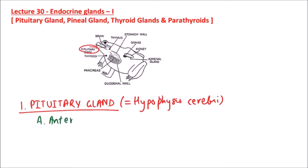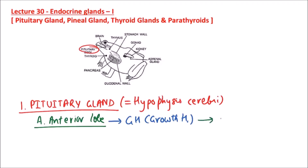The first lobe is the anterior lobe. From the anterior lobe, various hormones are released, such as growth hormone. Growth hormone promotes the physical growth of the body.